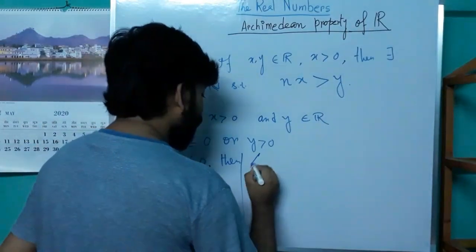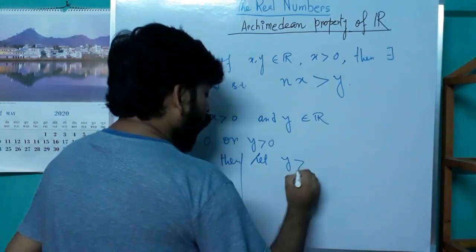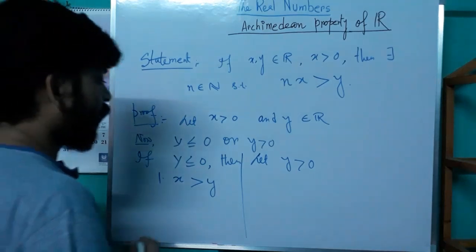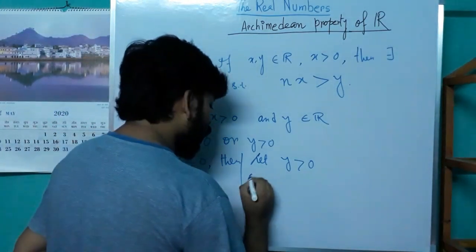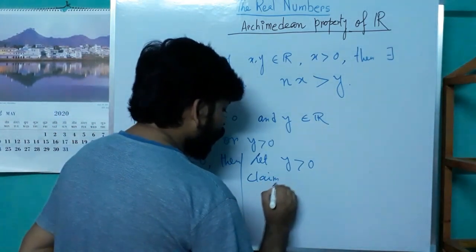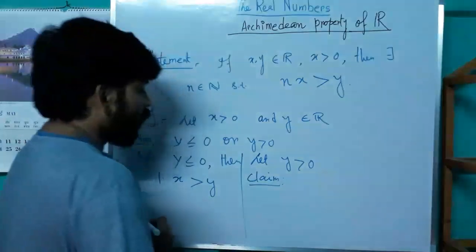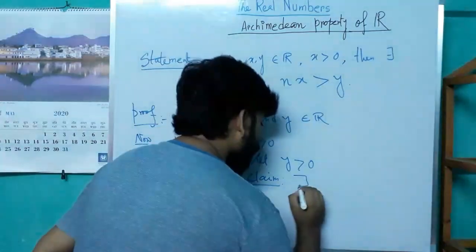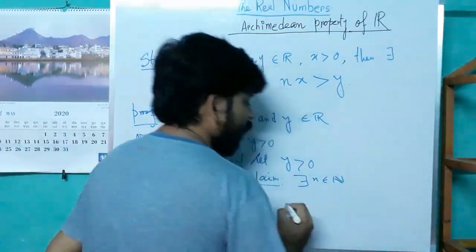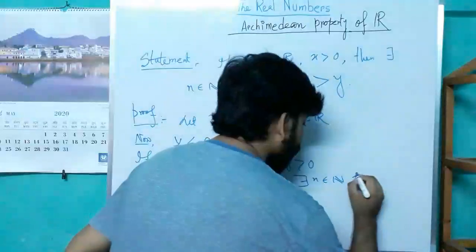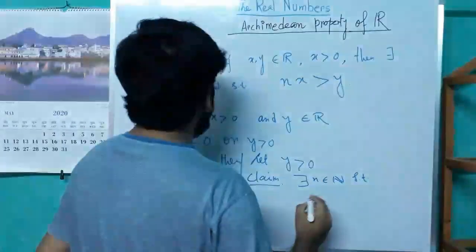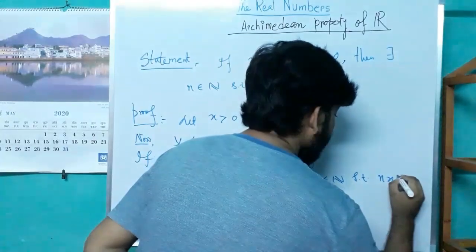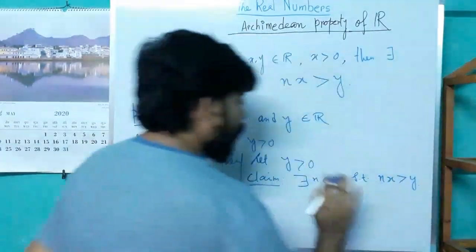Now let us assume that y is positive. Then our claim is that there exists a natural number n ∈ ℕ such that n·x is strictly bigger than y. This is our claim.